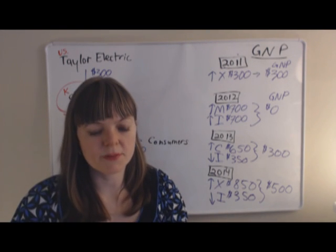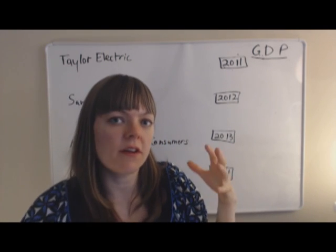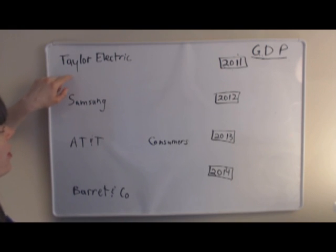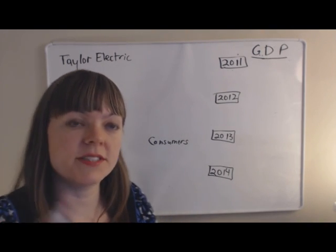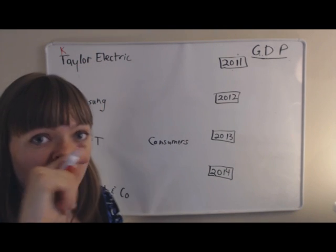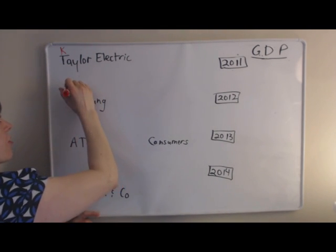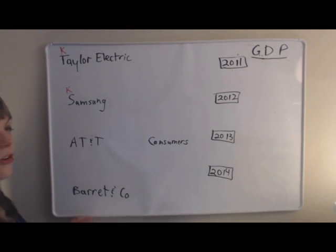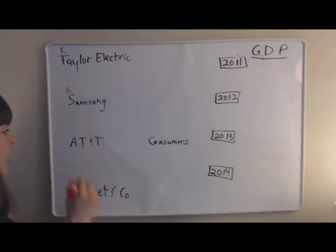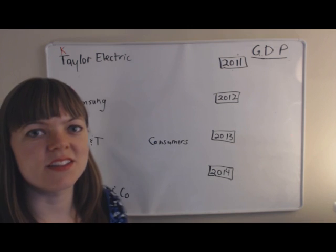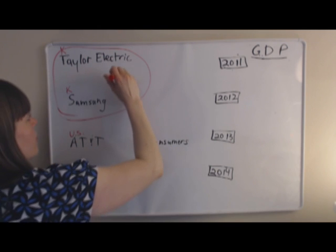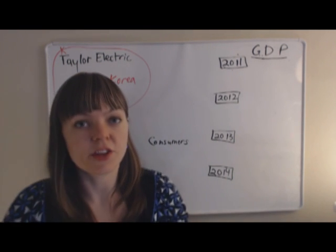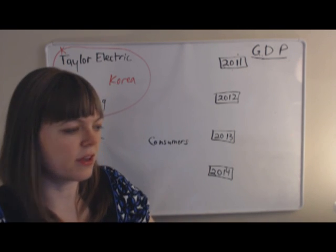Now let me redo this problem for GDP. For GDP, what matters is where the firm is physically located. Taylor Electric is a U.S.-owned firm physically located in Korea, so from the GDP standpoint, Taylor Electric is in Korea. Samsung is a Korean firm located in Korea — also in our Korea section. AT&T is physically located in the U.S. Consumers are physically located in the U.S. Barrett & Company is physically located in the U.S. So I draw a border around Korea, and everything else is the U.S. Then I go through it the same way as the GNP problem.